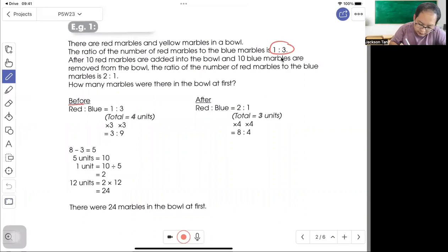Before, you put 1 to 3. Then 10 red marbles are added and 10 blue marbles are removed. The total ratio is 2 to 1. After that it's 2 to 1. Do you realize that the total did not change? 10 red marbles are added, so you put 10, but I take away 10 as well.